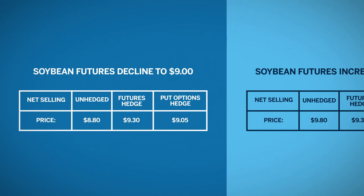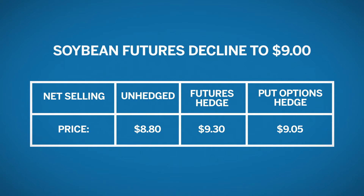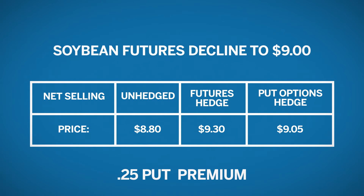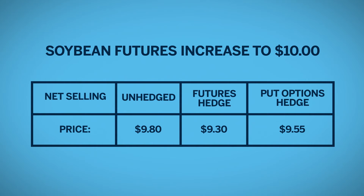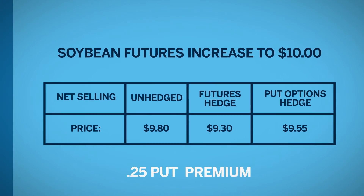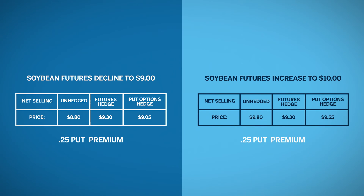So with soybean prices falling, the net selling price of $9.05 was lower compared to the $9.30 he would have locked in with the short futures hedge — the difference essentially being the option premium. The farmer was quite willing to pay the premium, however, because it allowed him to secure protection from declining prices and, unlike the short futures hedge, still have the opportunity to get a better price in a rising market: $9.55 versus $9.30 with a futures hedge. He will receive less than the $9.80 he would have gotten had he not hedged at all, the difference again being the option premium. But knowing that the price could have just as easily declined, he was willing to pay this cost to ensure a minimum selling price for his soybeans.